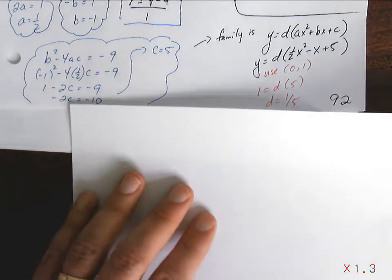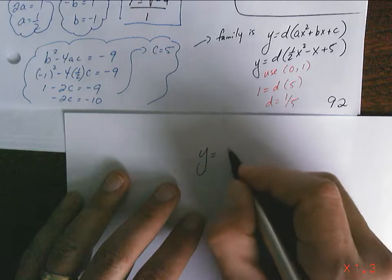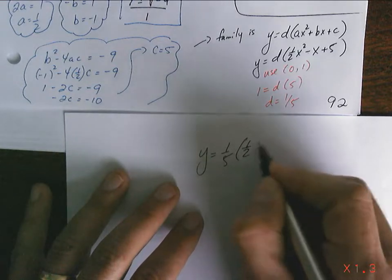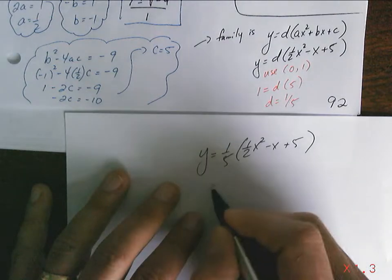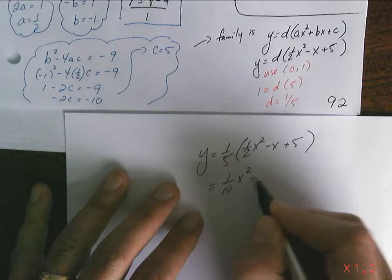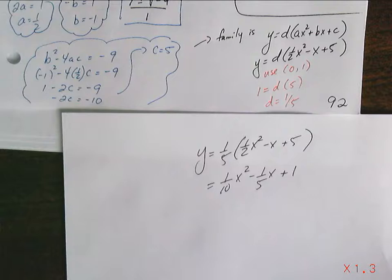So putting it all together. I'm going to have y equals 1 fifth bracket 1 half x squared minus x plus 5. Take the 1 fifth in. It'll be 1 over 10 x squared minus 1 over 5 x plus 1. And that would be your final answer.